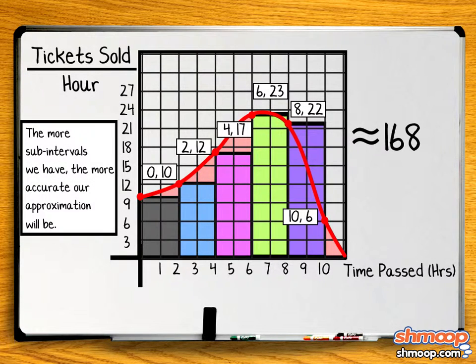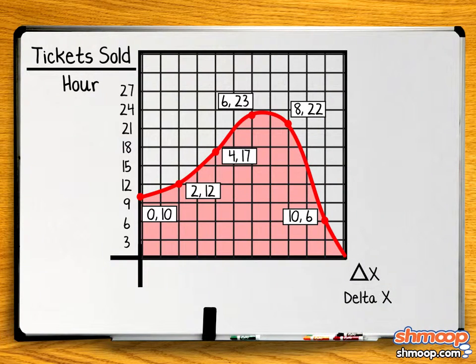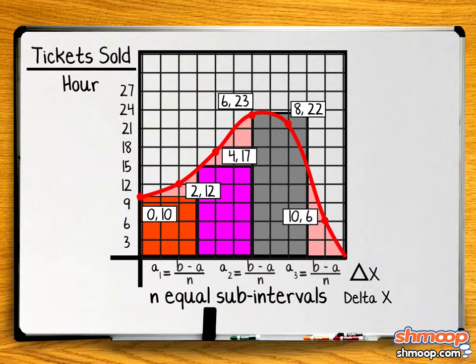But the more subintervals we have, the more accurate our approximation would be. Suppose we wanted to generalize the width of our subintervals with a formula. What does generalize mean? This is what it means. We can label our width with delta x. Since we're dividing the interval, a b, into n equals subintervals, each subinterval will have length b minus a over n. So delta x equals b minus a over n.